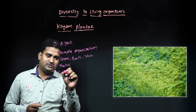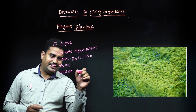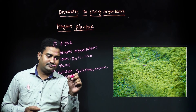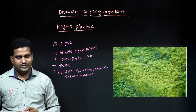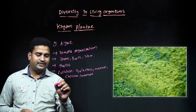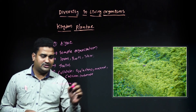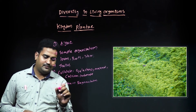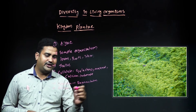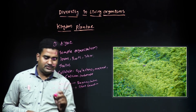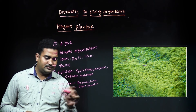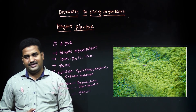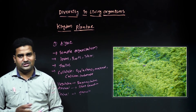Algae contain cellulose, galactans, mannans, and calcium carbonate in their cell walls. They reproduce vegetatively by fragmentation, asexually by spore formation, and sexually by gamete formation. Water is required for fertilization.